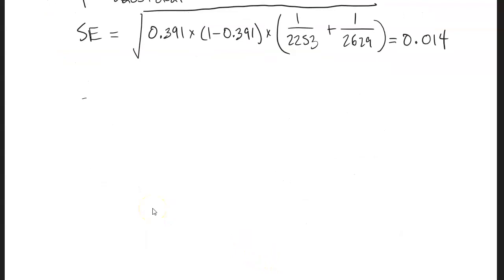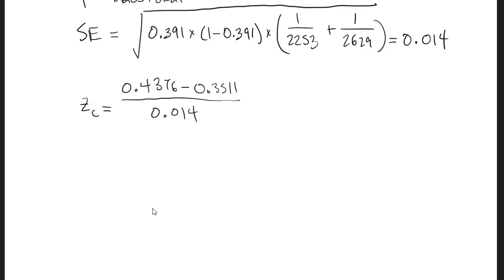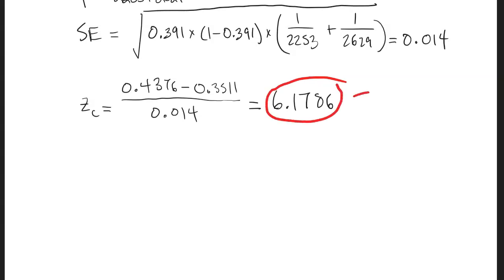The test statistic is p̂1 minus p̂2 divided by our standard error. There is technically a minus zero because we're subtracting the null hypothesis value, but we don't need to write it. The z-score equals 6.1786. A z-score of 6 is incredibly unlikely under the normal distribution, so we already expect strong evidence in favor of the alternative hypothesis.